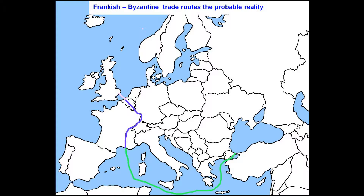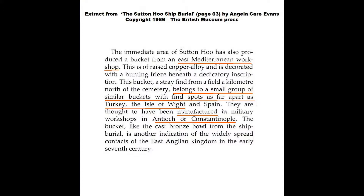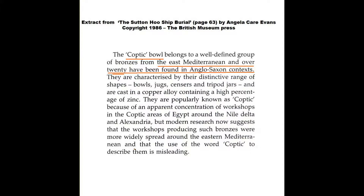We see Frankish influence in trade goods from the Byzantine and Merovingian Frankish realm. An Eastern Mediterranean copper bucket was found near the Sutton Hoo burial but not in it. These magnificent buckets have been found all over the post-Roman world, in Turkey, Spain and the Isle of Wight. The more interesting case is a cast bronze bowl which was actually found in the Sutton Hoo burial. This type of bowl is often wrongly described as a Coptic bowl — they originated from many different East Mediterranean workshops of the Byzantine Empire.